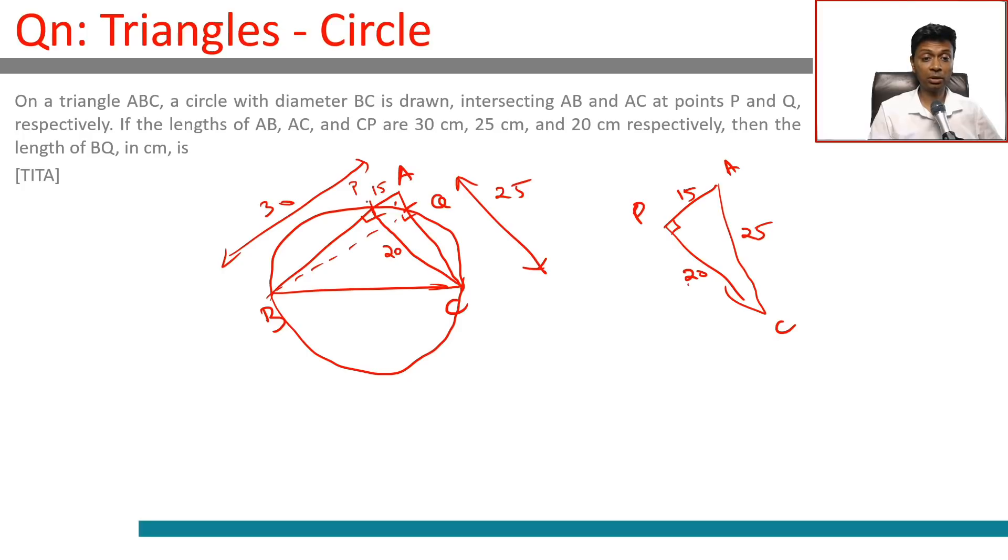AP is 15. That means PB should be 15. I know our triangle, our line BA. It does not look like P is a midpoint of BA, but that's what the math is telling us. So this is 15, this is 15, this is 20.